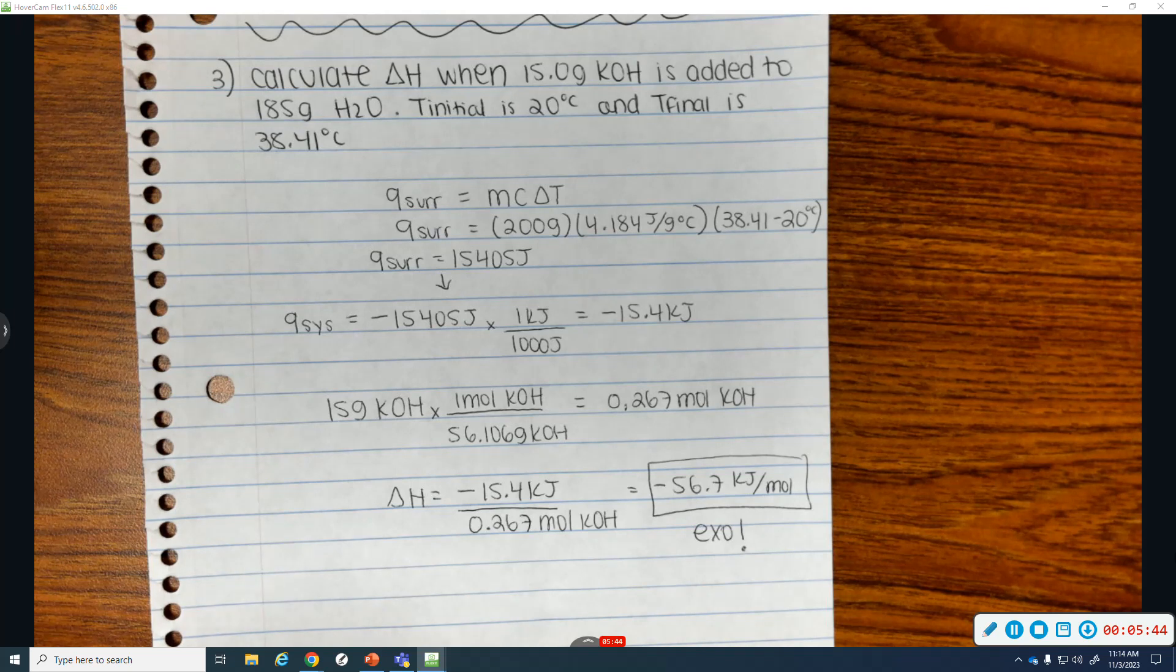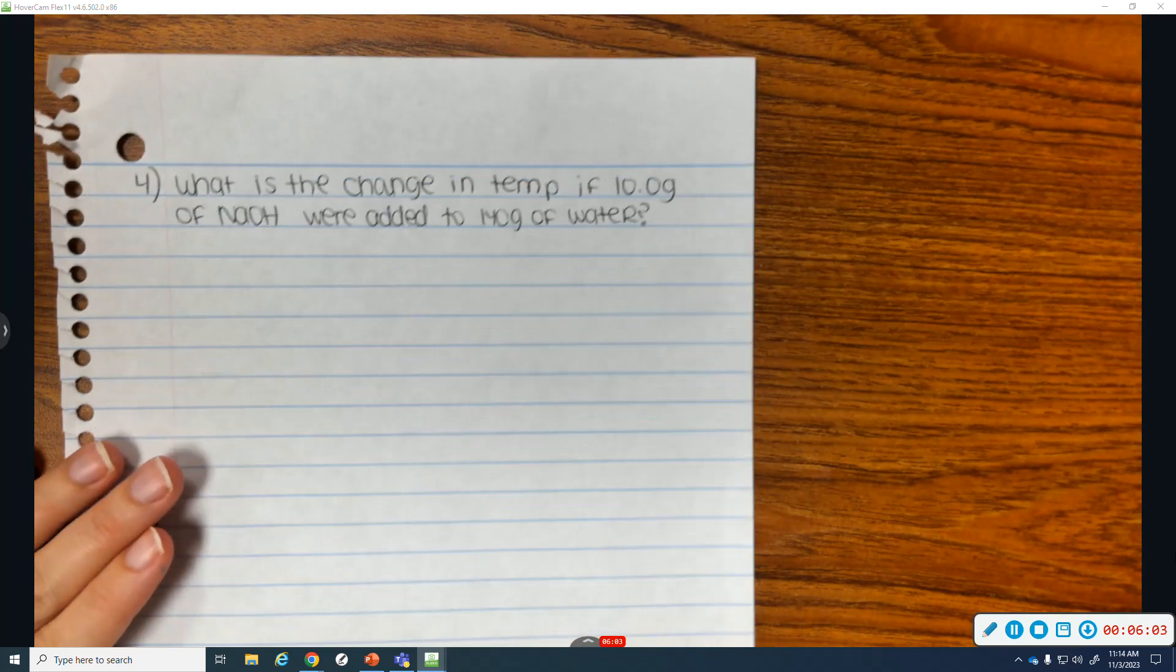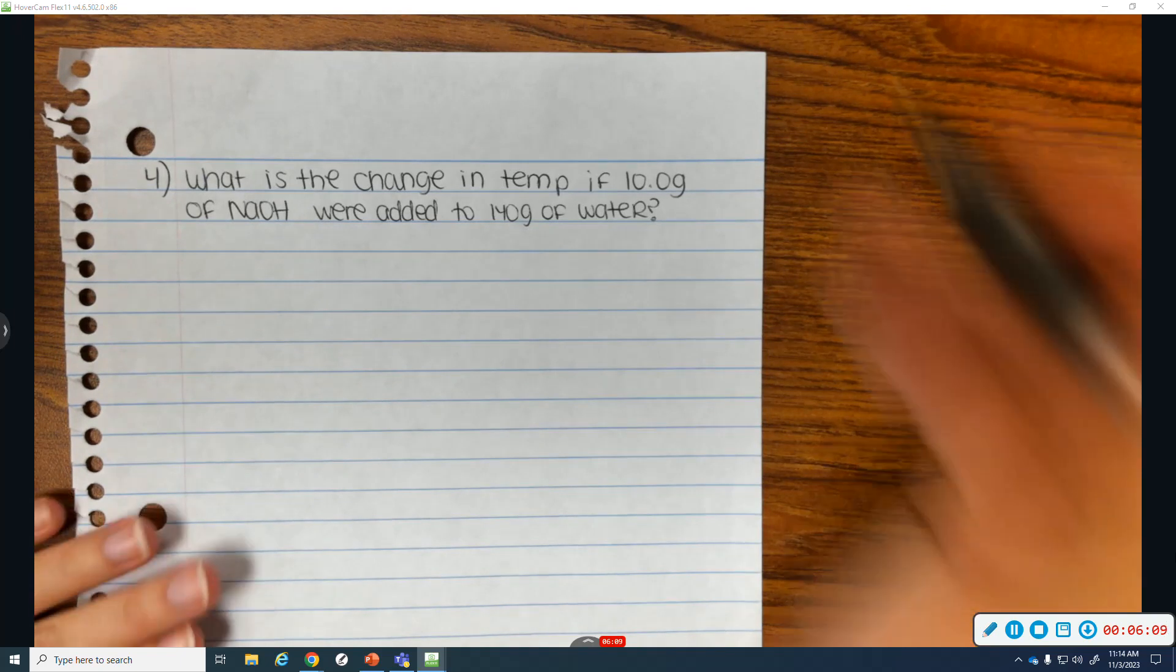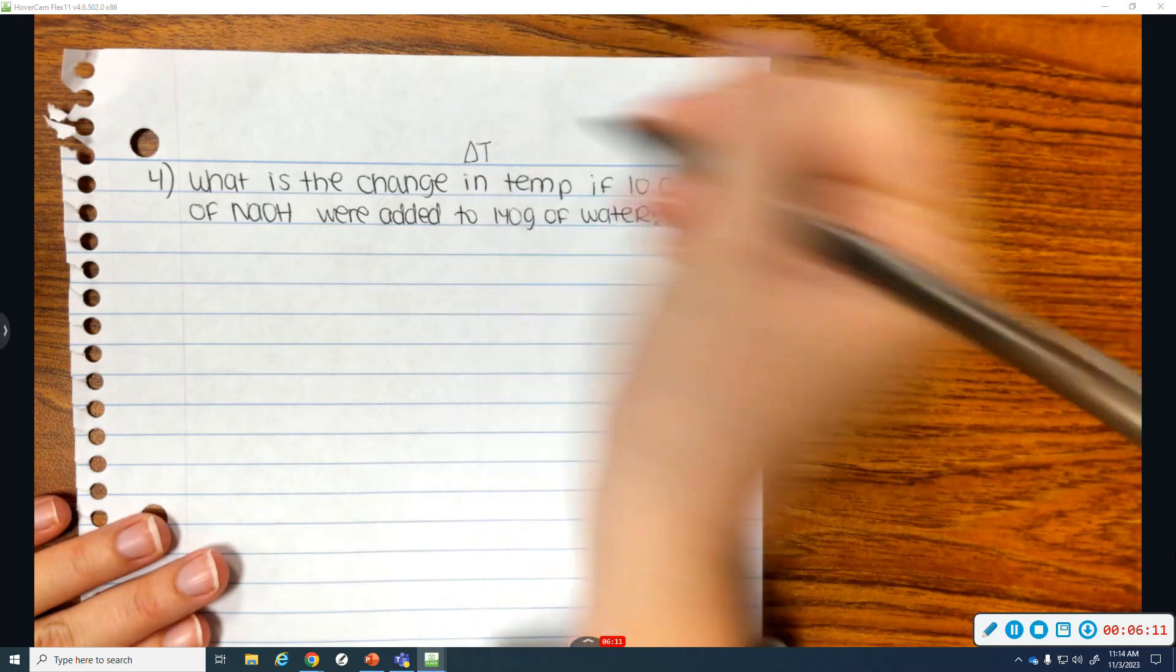So that is how you solve for enthalpy when you're given temperatures and masses. The next problem that I'm going to do is still an enthalpy problem, but it's actually going to be working backwards. And so if you're in my class, it is number four. So what's the change in temperature if 10 grams of NaOH were added to 140 grams of water?